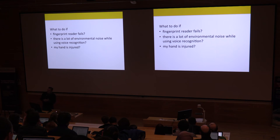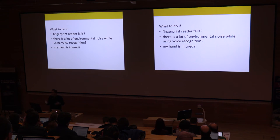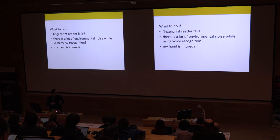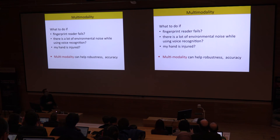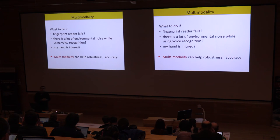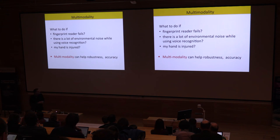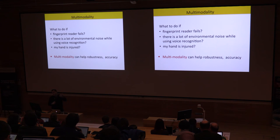Every time you talk about biometrics, people ask: what happens if the reader fails, or if you have a scar — there are usability and robustness issues. People working on biometrics solve this using multimodality: you don't rely on a single modality but more than one. In airports, for example, you have at least two modalities replacing the passport. Multimodality can help for both robustness and accuracy. In the scheme I'm presenting, we use it primarily for accuracy rather than robustness.